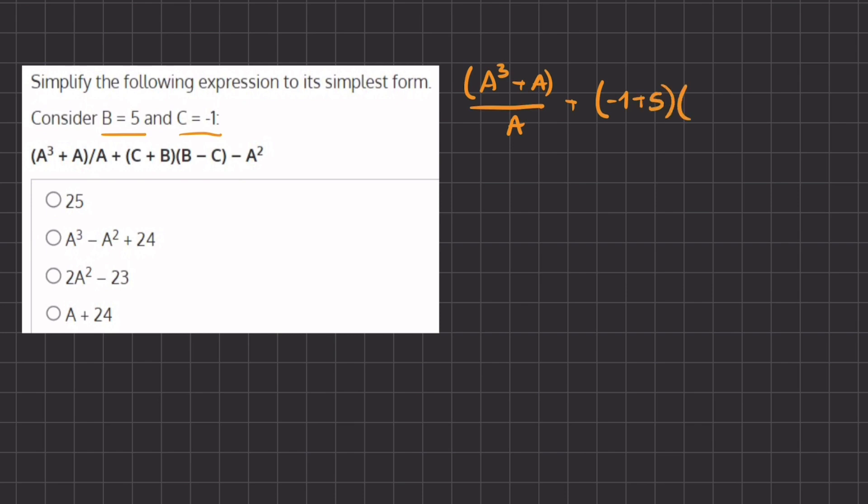In our second parenthesis, B, which is 5, minus our negative 1, which is C, times B minus A squared.